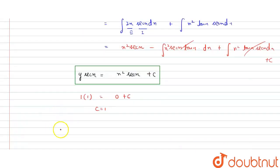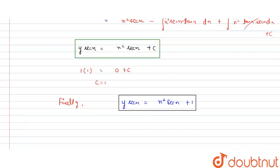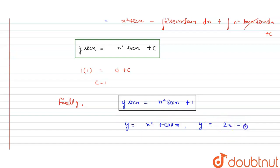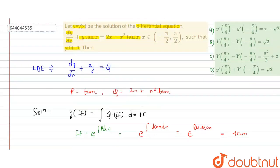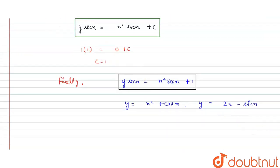So the final solution is y·sec(x) = x²·sec(x) + 1. Writing y explicitly: y = x² + cos(x), since 1/sec(x) = cos(x). Then y' = 2x − sin(x). The options involve y(π/4), y'(π/4), y(−π/4), and y'(−π/4).